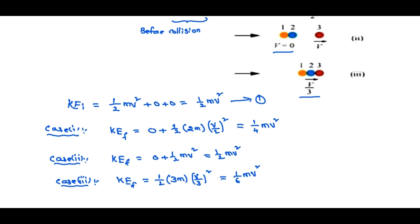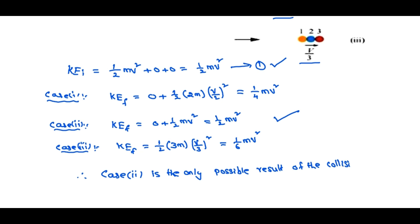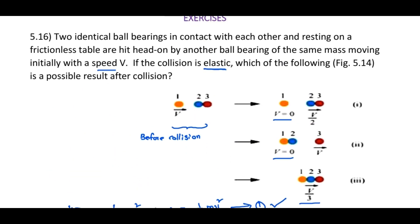Observing equation one — the initial kinetic energy — and comparing the final kinetic energies in cases one, two, and three: case two's final kinetic energy equals the initial kinetic energy, so both are equal. Therefore case two is the only possible result of the elastic collision. For this problem, the second case is the suitable answer.